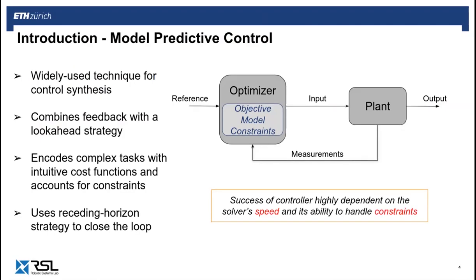Therefore, one could say that the quality of the resulting control law highly depends on these two factors: the speed at which the underlying optimal control algorithm solves the problem, and how well this algorithm handles the problem constraints.